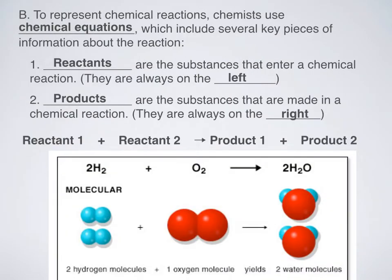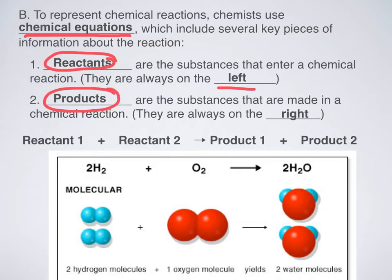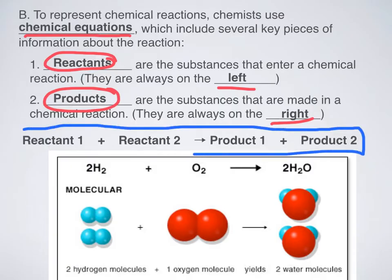How do we represent chemical reactions? We use chemical equations, which we're familiar with to some degree. Reactants are the substances that enter a chemical reaction, so they are written on the left side. Products are substances that are made in a chemical reaction, so they're always on the right. You can think of this as our generic formula: reactant 1 plus reactant 2 yields product 1 plus product 2. You can have as many reactants or products as you need.